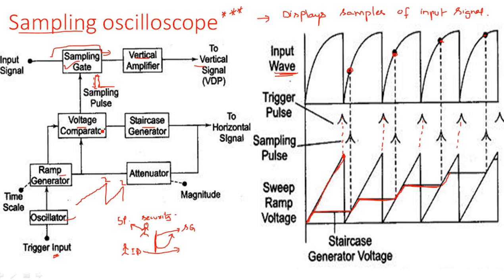The ramp output and the staircase output are both fed into the voltage comparator. The purpose of the voltage comparator is to compare these two incoming signals. Whenever the two voltages are equal, it produces a sampling pulse. At each instant where the ramp voltage equals the staircase voltage level, the voltage comparator fires a sampling pulse.